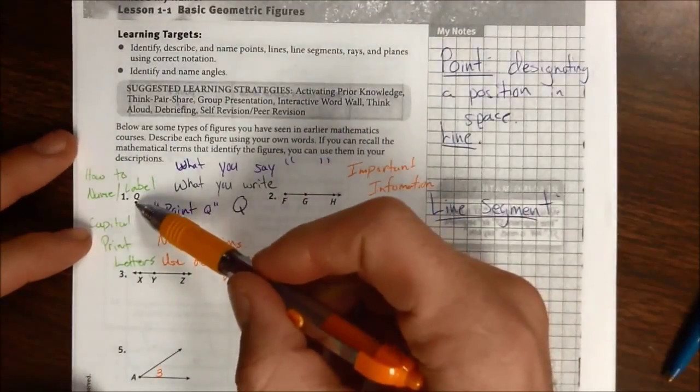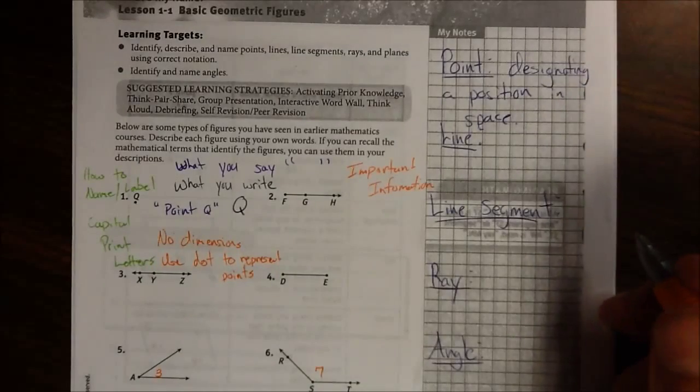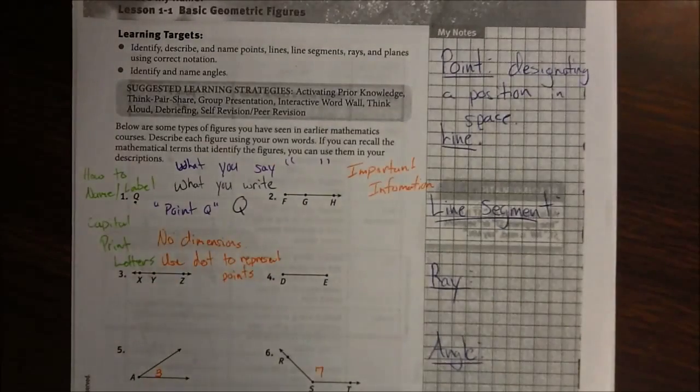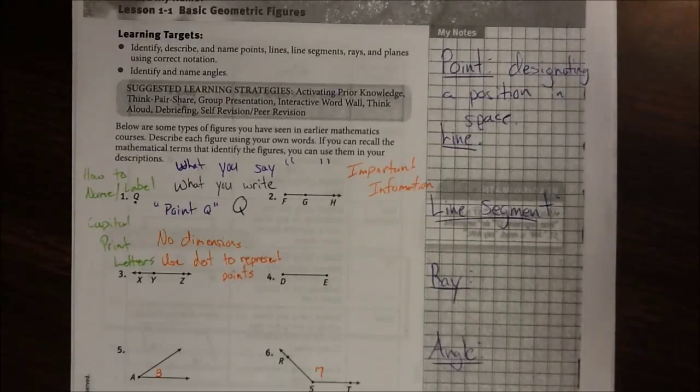And we use a dot to represent that. So just like here, there's a dot there. So if there's not a dot next to a capital letter, then they're referring to something else. It's not a point. We'll get into that later.